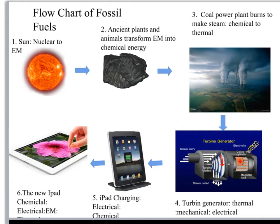I'm using an iPad here to make this video. Where did the electricity to use this iPad come from? First, it started at the sun. The sun is a star, so it takes nuclear energy — the energy from combining hydrogen atoms into helium. When those are fused together, this is an example of nuclear fusion, and that is converted into electromagnetic radiation of all different forms.